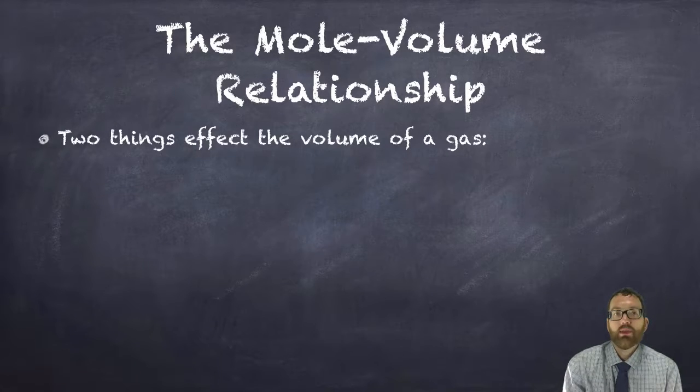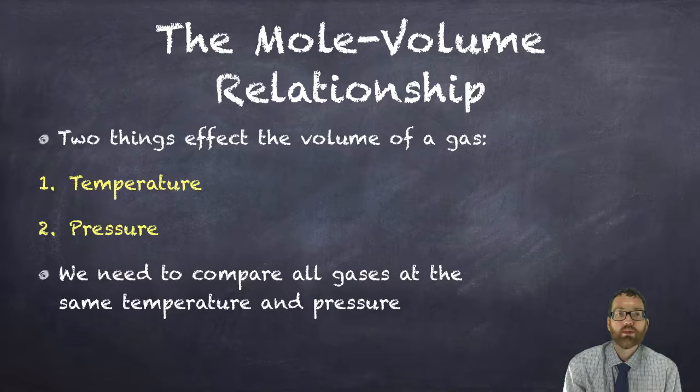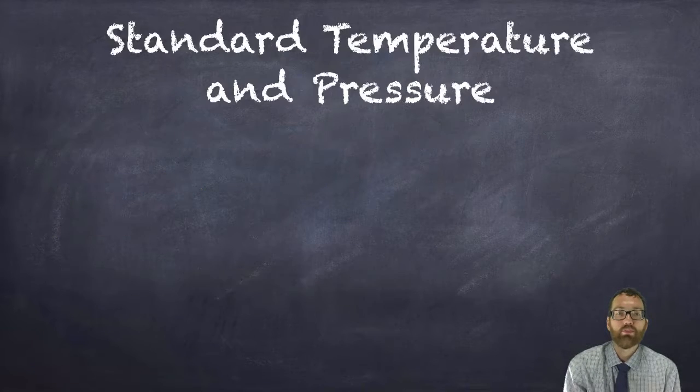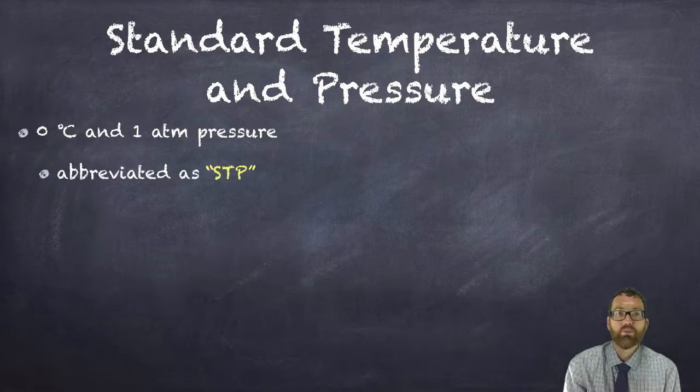When you're experimenting with gases, there are a couple of variables that can affect them. Two things that affect the volume of a gas are the temperature and the pressure. So we need to compare all gases at the same temperature and pressure. We call that standard temperature and pressure, and it is zero degrees Celsius and one atmosphere of pressure. We abbreviate this as STP.